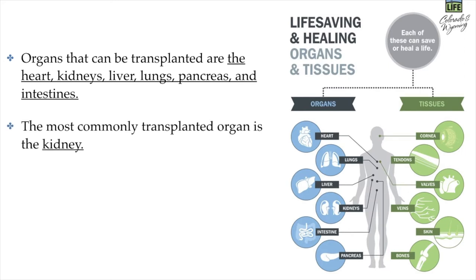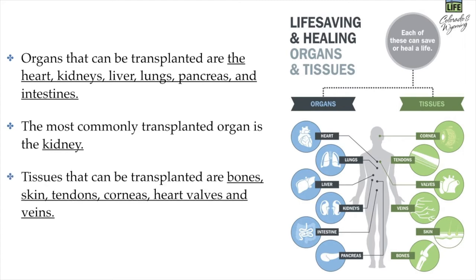Kidneys are the most commonly transplanted organs, but there can also be tissue transplants — for example, bone transplants, skin, tendons, corneas. We have not yet gotten to the point that we transplant entire eyes, but tissues of the eyes like the corneas can actually be transplanted, especially commonly done with older people that have cataracts, where their corneas become cloudy and they can get fresh corneas transplanted into their eyes. Sometimes you might not need an entire heart transplant — you might just need heart valves, just the doors that open and close the different chambers of the heart.